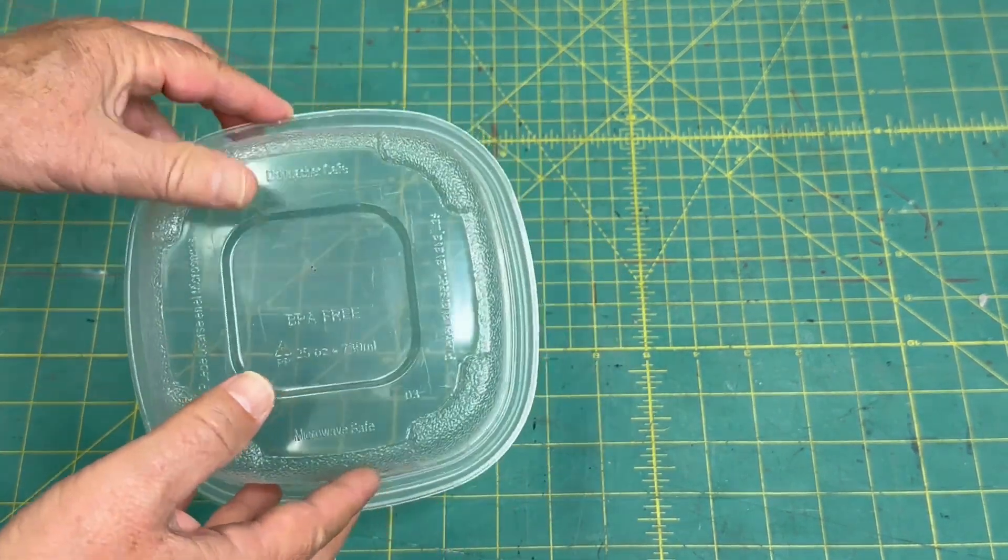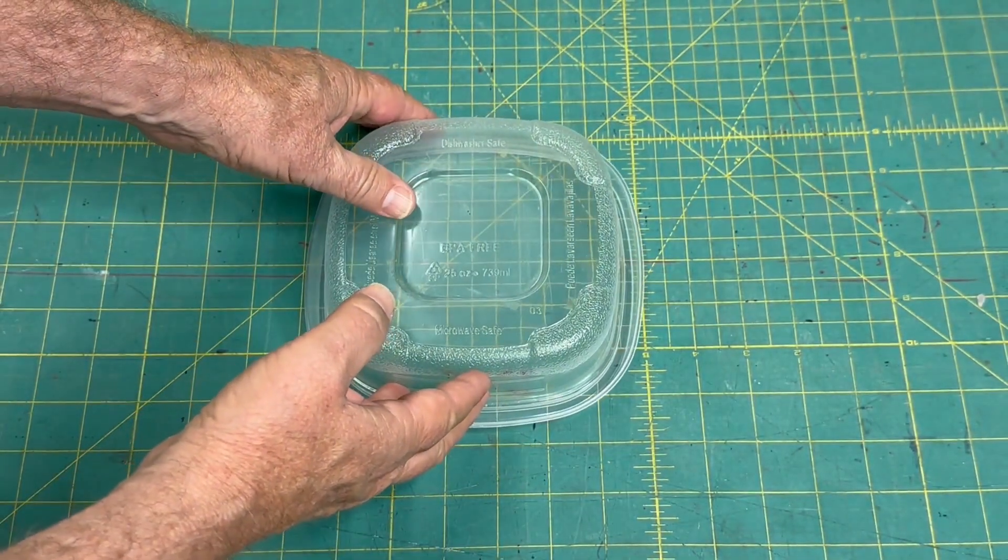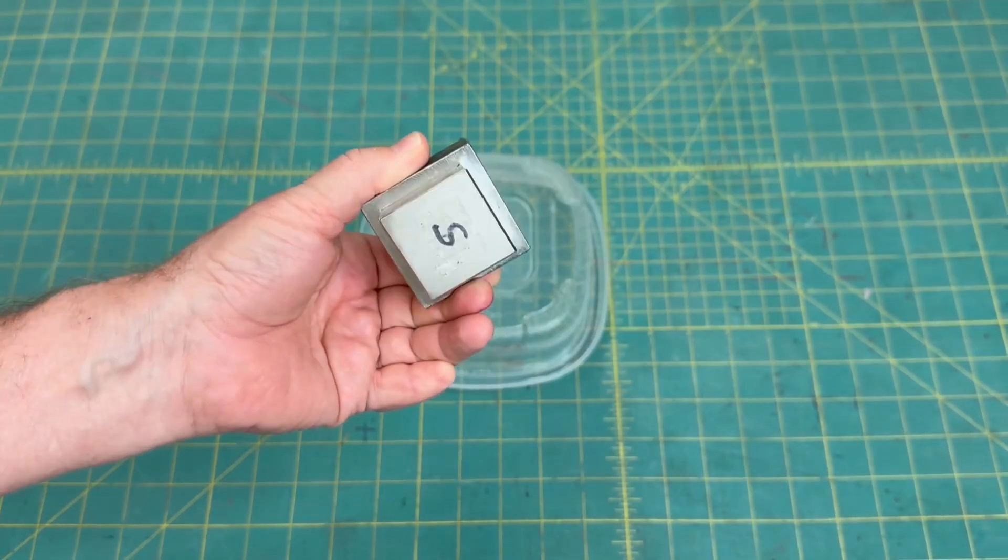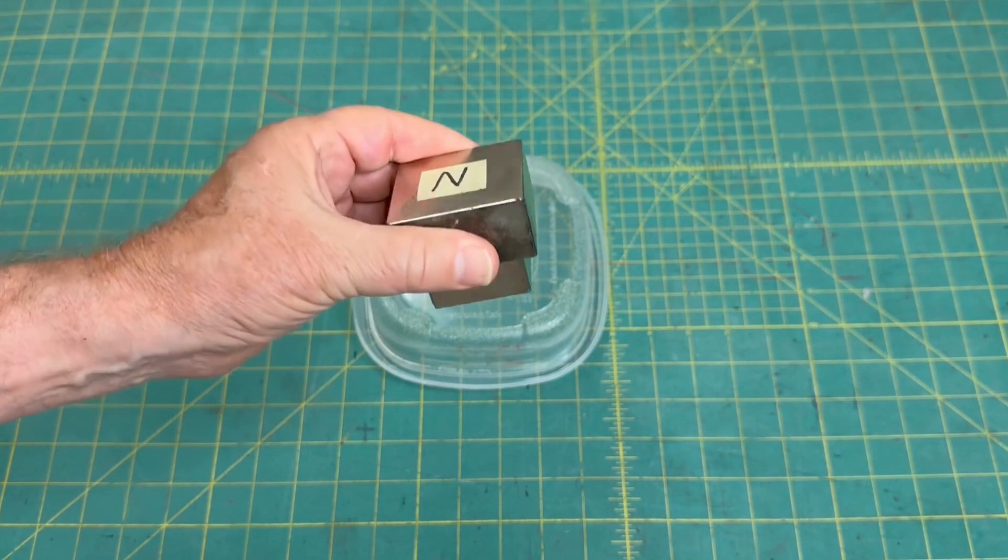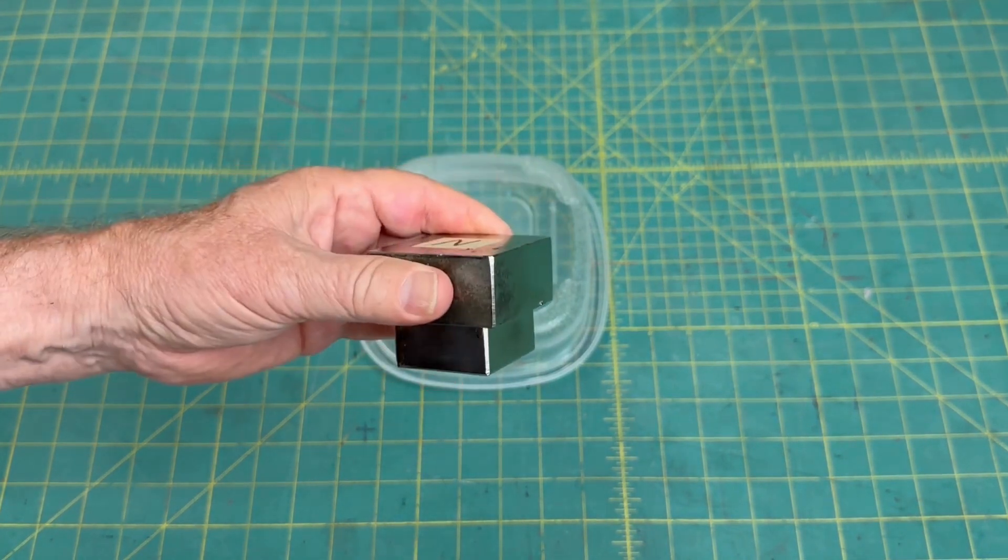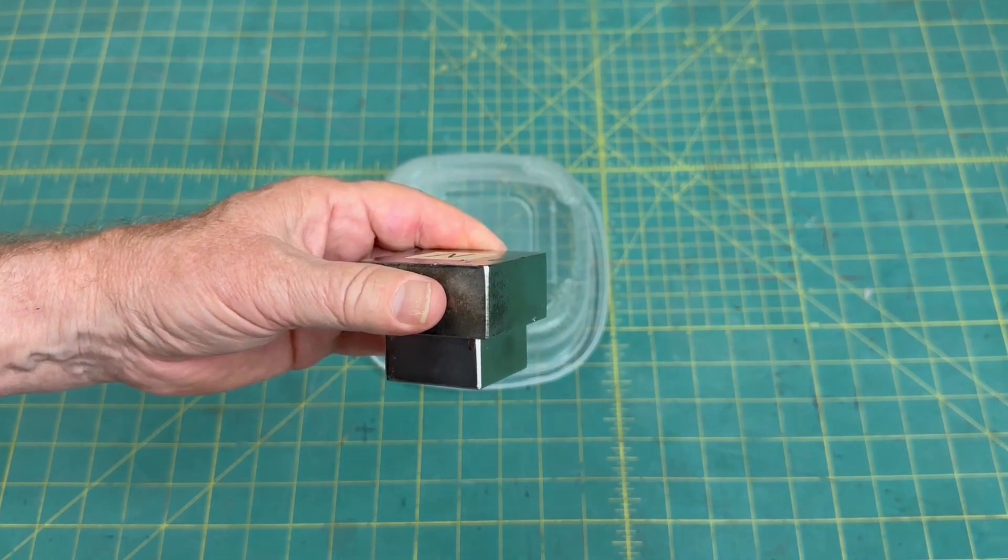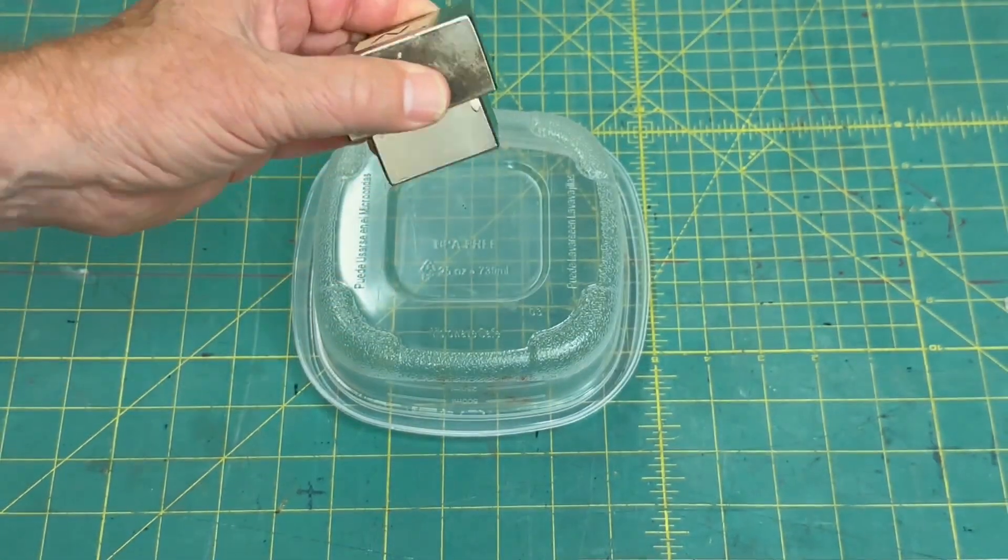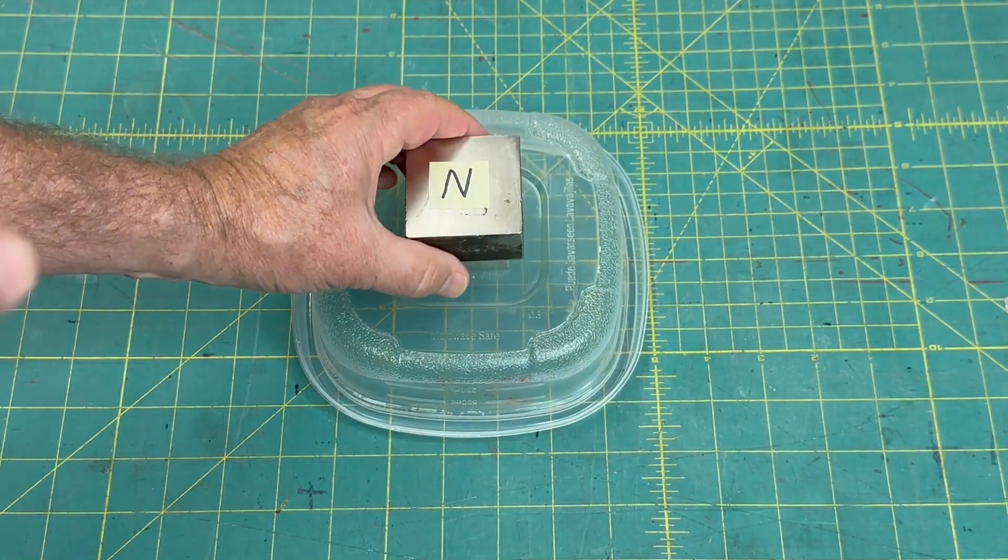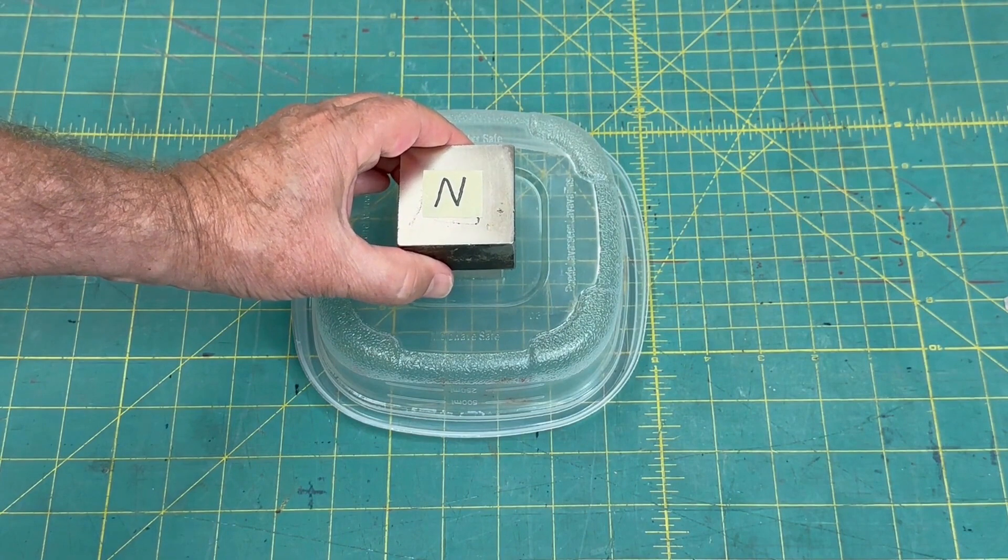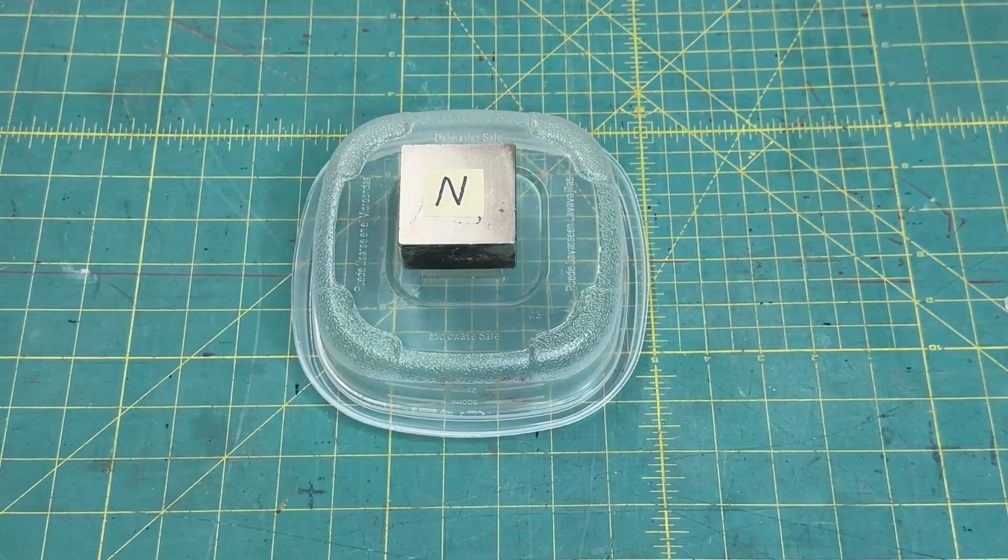First we're just going to set it face down here. This is a stack of two neodymium magnets we're going to use to give the system its magnetic field. We're going to place the magnet so that the south pole is facing down into the container when it's upright, and then we're just going to tape it into place.